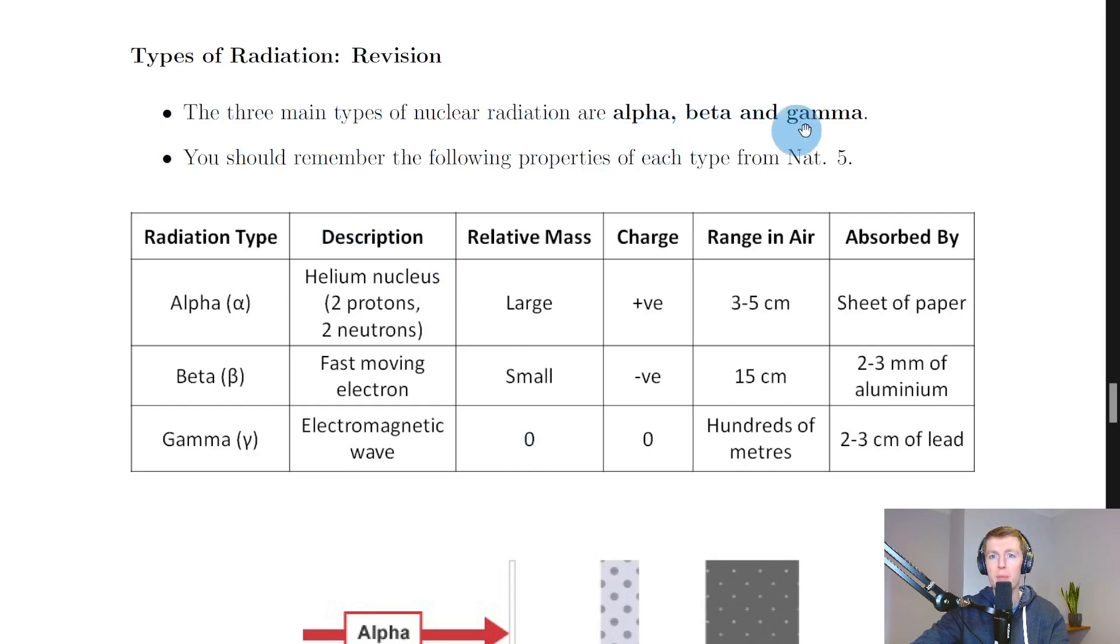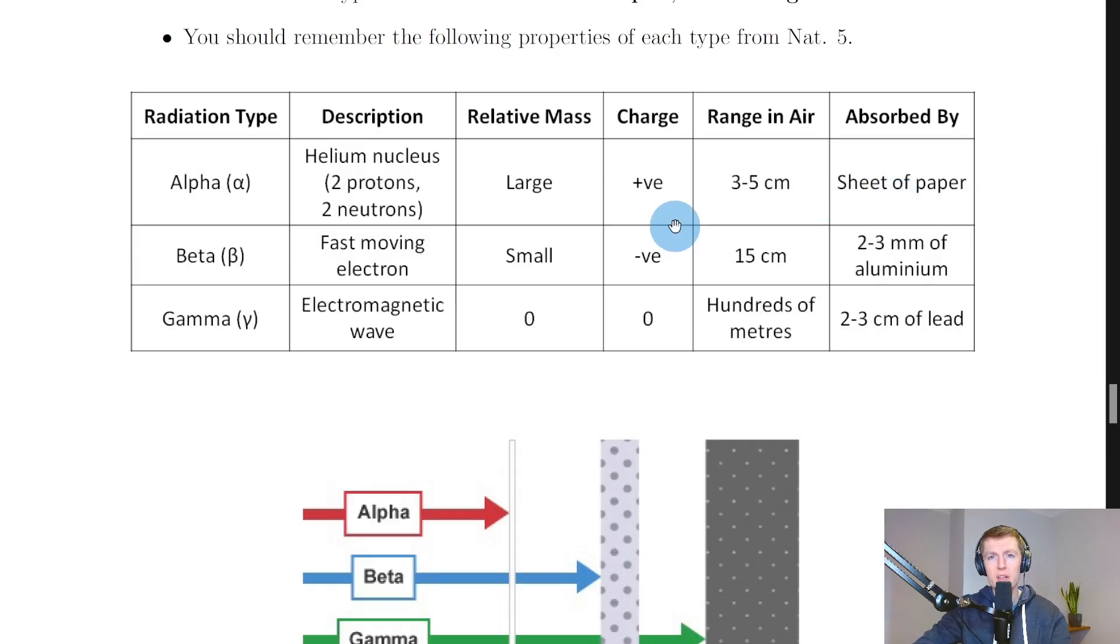It says here the three main types of nuclear radiation are alpha, beta, and gamma. You should remember the following properties of each type from National Five. So instead of giving you all the information again here like we did in National Five, I've just given you the summary table here to try and help you remember some of the properties.